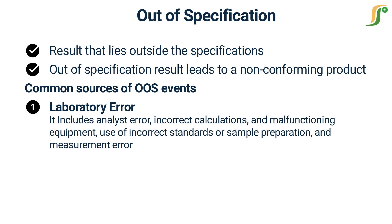Laboratory error should be relatively rare. Frequent errors suggest a problem that might be due to inadequate training of analysts, poorly maintained or improperly calibrated equipment, or careless work. Whenever a laboratory error is identified, the laboratory should determine the source of that error and take corrective action to prevent recurrence.